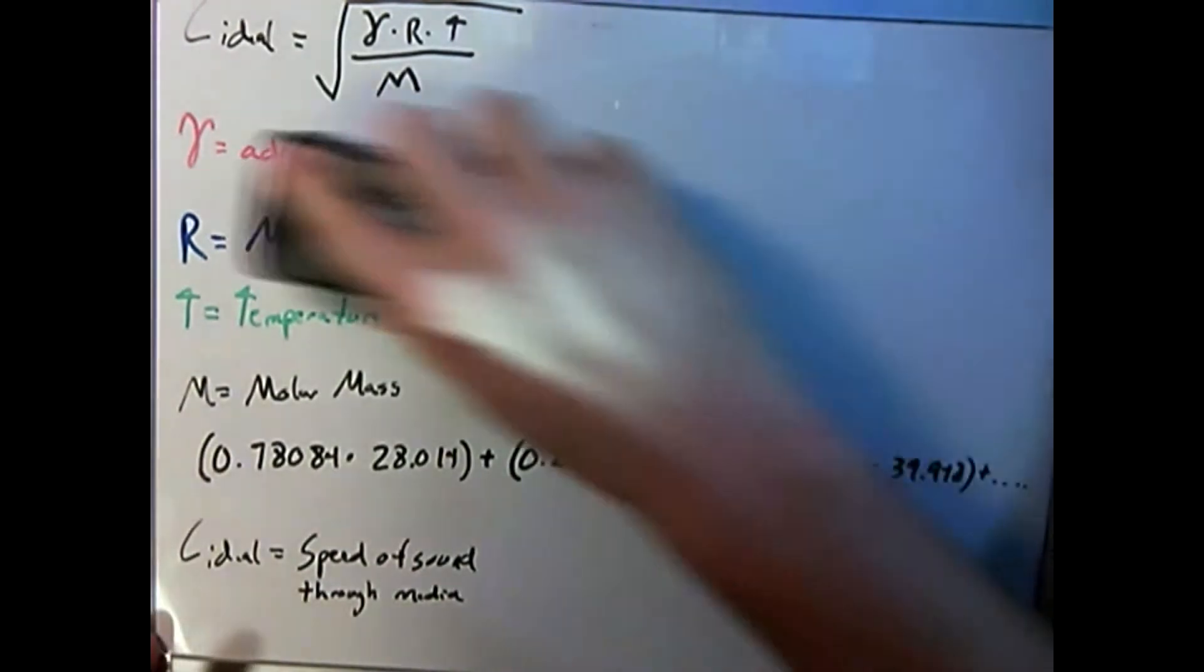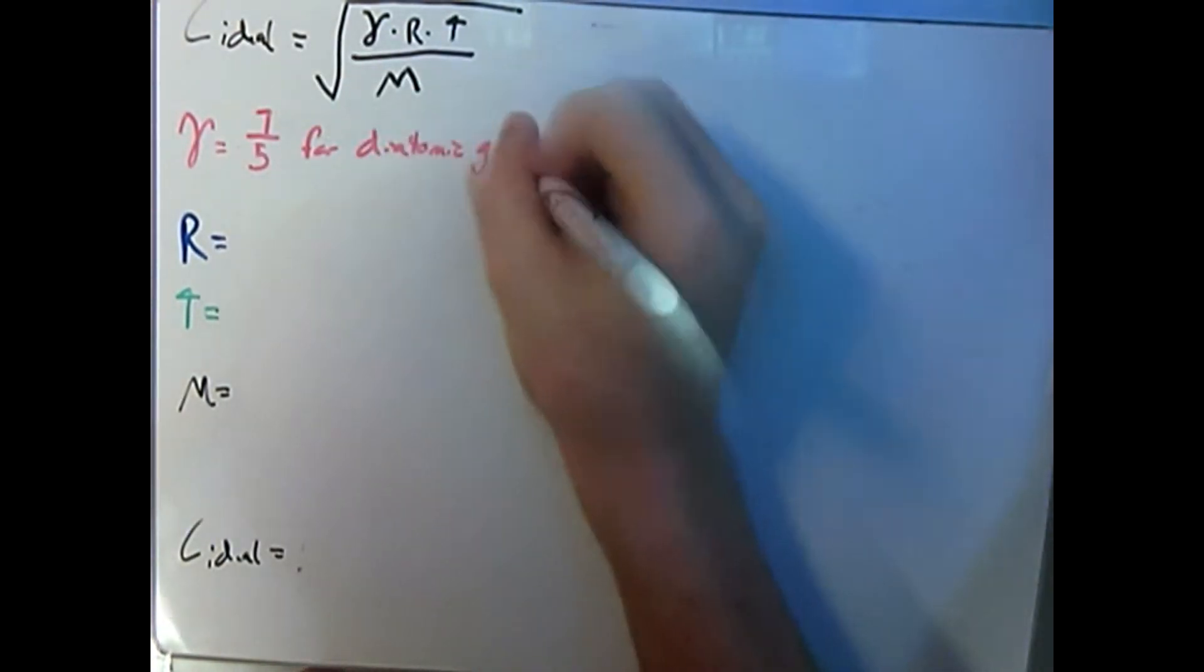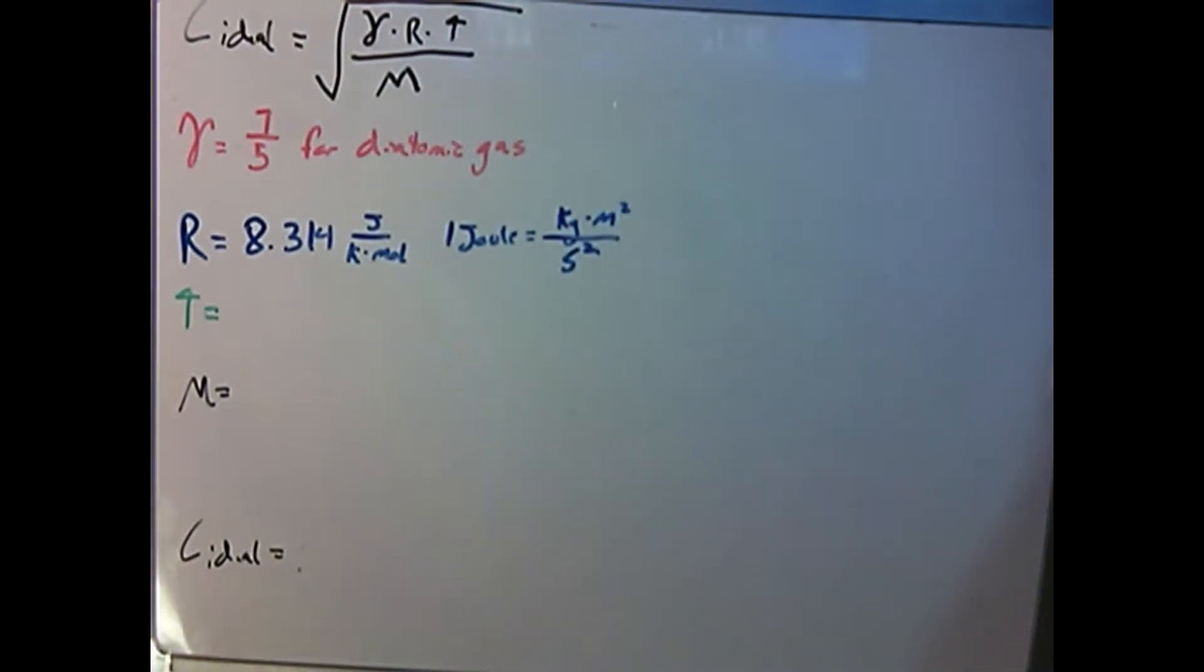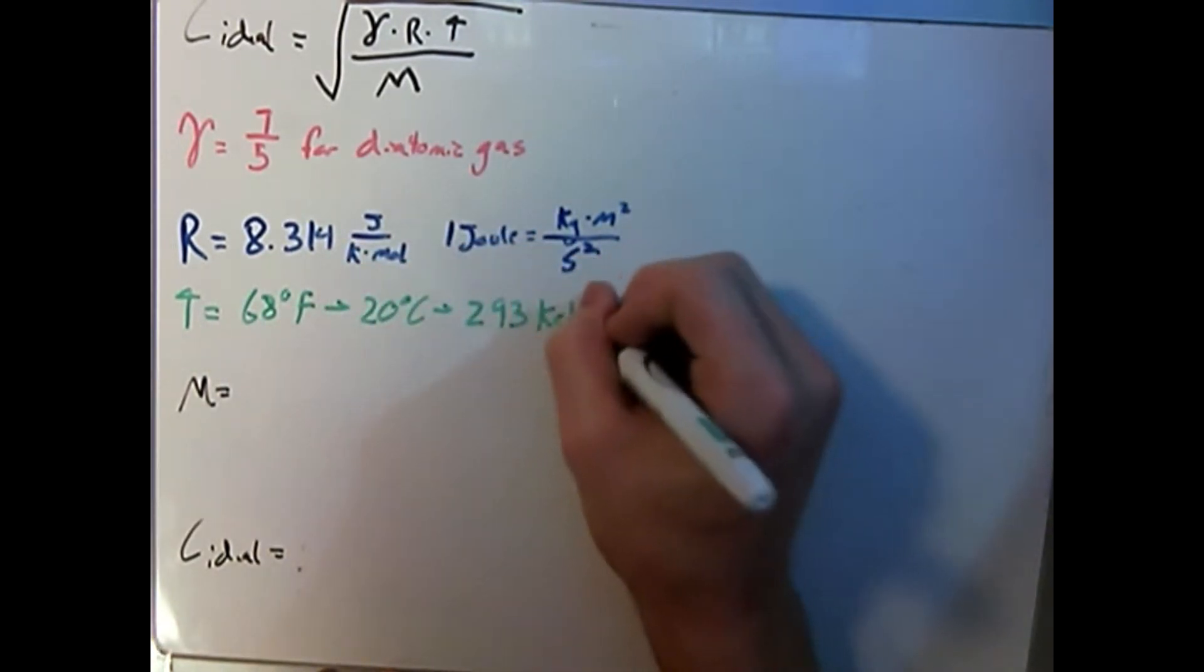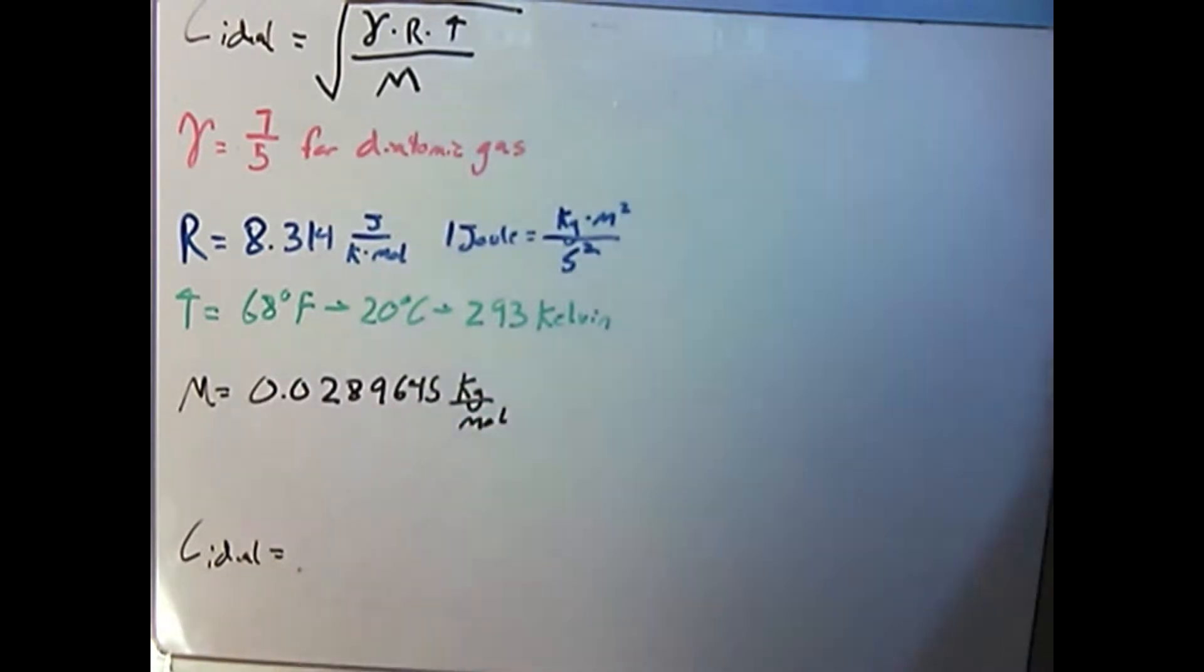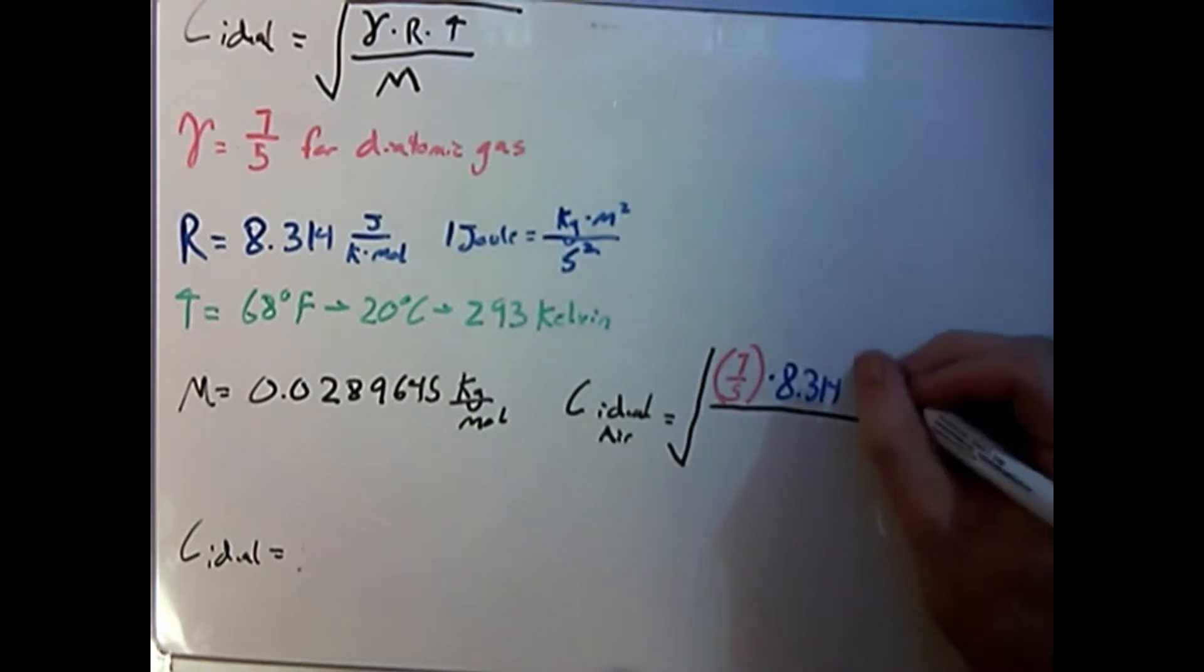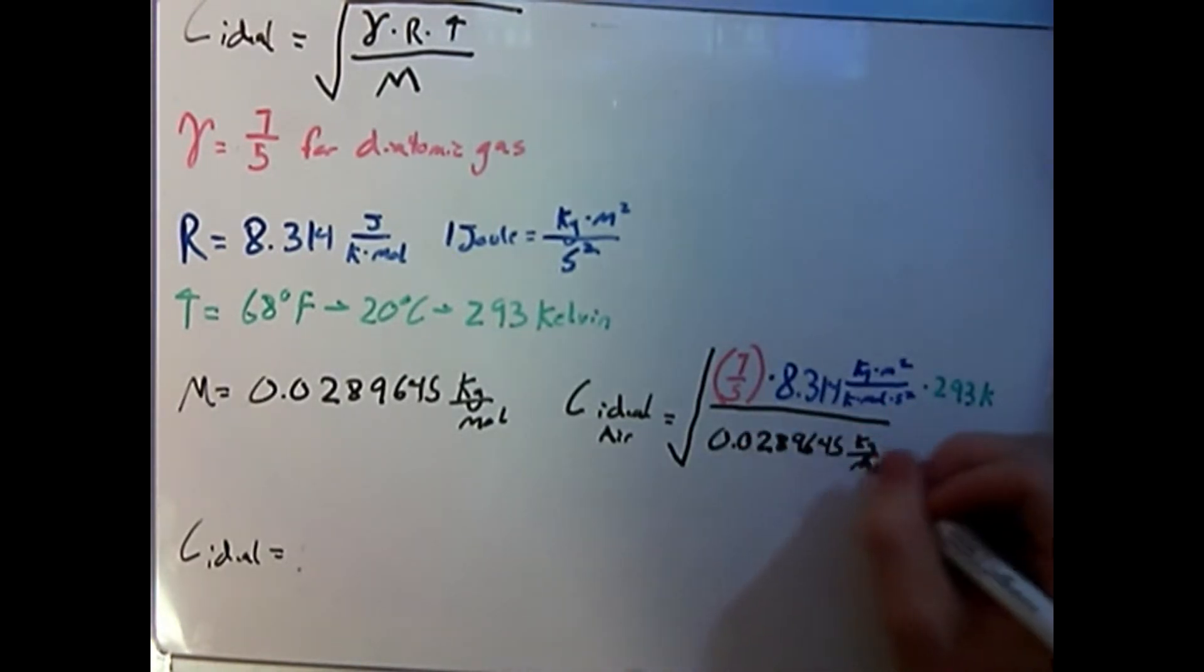Now let's plug in some values and see what we get. For diatomic gases, gamma is 7 fifths. R equals 8.314 joules per Kelvin mole. Now remember, a joule is a kilogram times a meter squared per second squared. This will be important later on. Our temperature was around 68 degrees Fahrenheit, which translates to around 293 Kelvin. After multiplying all the relative abundances by the molar masses, you come up with around 0.029 kilograms per mole. Now we begin plugging in our values. 7 fifths for gamma, 8.314 for R, remembering to change joule to kilogram meter squared per second squared, 293 for temperature, and 0.0289645 for molar mass.